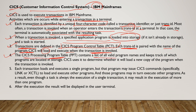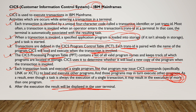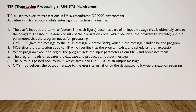The CICS Processing Program Table contains a list of valid program names and tracks which programs are in storage — CICS uses this to determine whether to load a new copy when a transaction is invoked. Each transaction loads and executes a single program, but that program may issue CICS commands to load other sub-programs, which may in turn execute further programs. After execution, the result is displayed in the user's terminal.